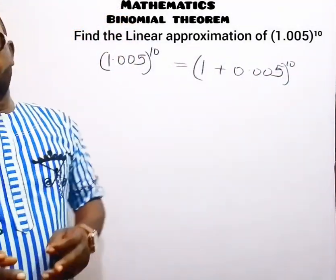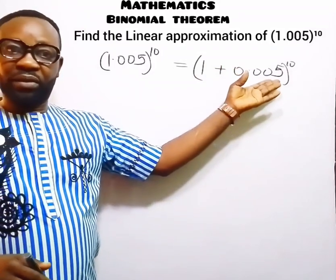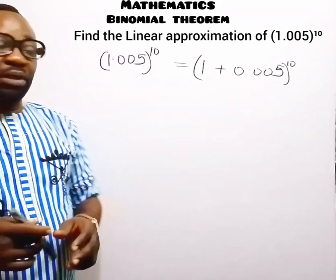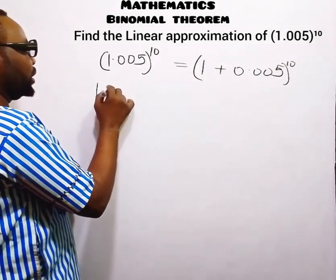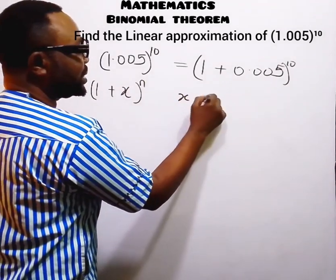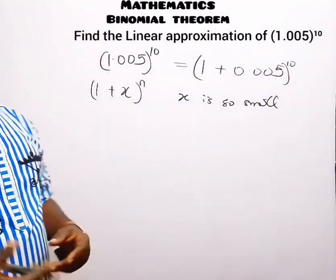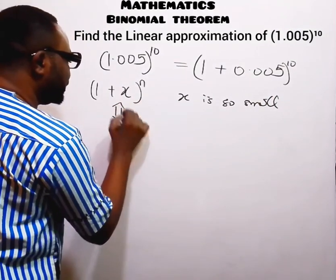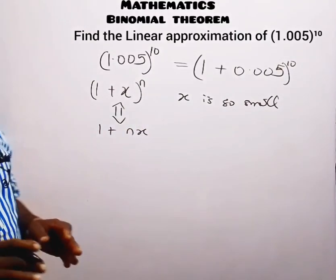Our intention when solving for linear approximation is to make the value of x small so we can apply our rule. That rule states: if we have (1 plus x) raised to the power of n and x is very small, then the expression becomes approximately 1 plus nx.